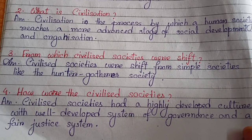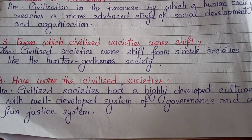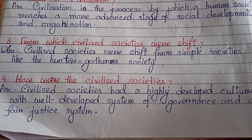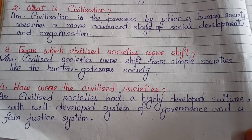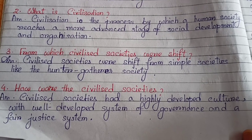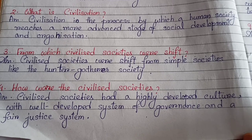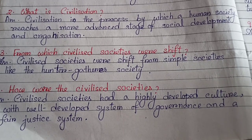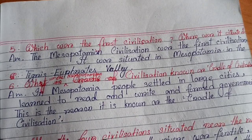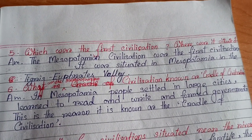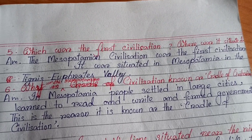Number three: From which societies were civilized societies shifted? Civilized societies were shifted from simple societies like the hunter-gatherer society. Number four: How were civilized societies? Civilized societies had a highly developed culture with a well-developed system of governance and a fair justice system.